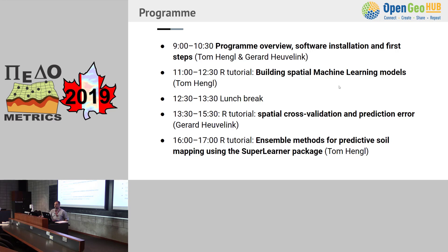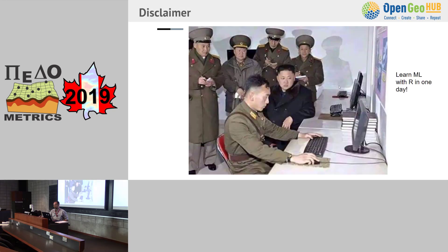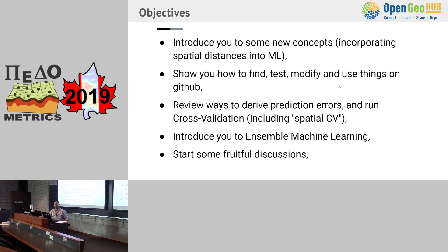So what are the objectives? We have this paper in PeerJ. How many of you have been looking at using distances with machine learning? I see only three hands — so there will be lots of new things. How many of you are daily on GitHub committing and doing things? Only one hand. That's also very good — so you will see a bit of GitHub culture.